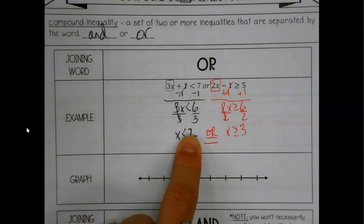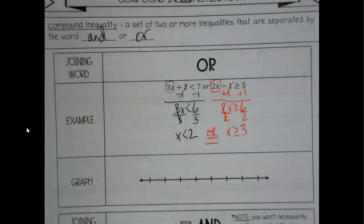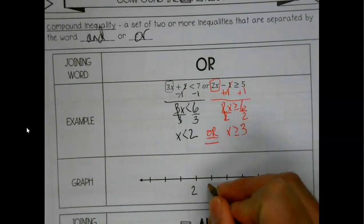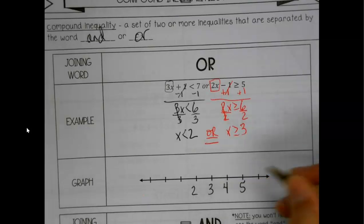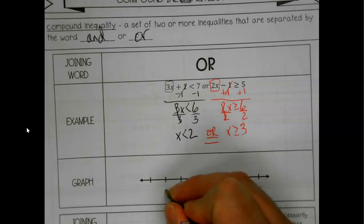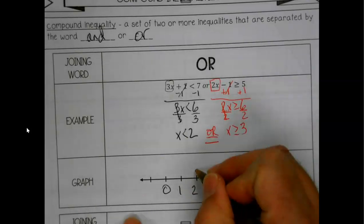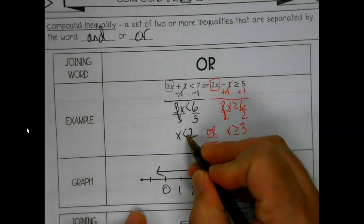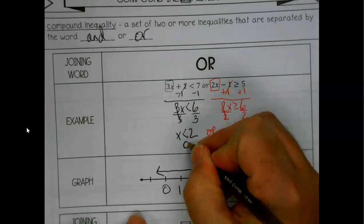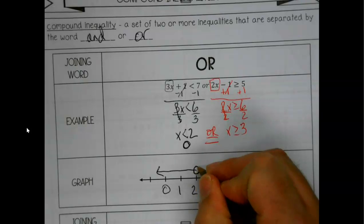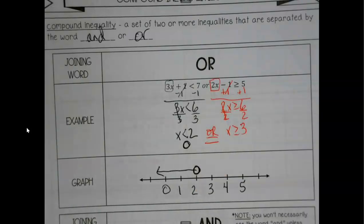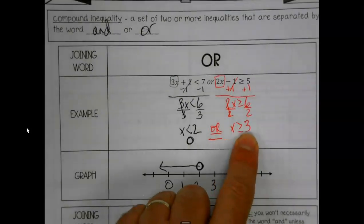The arrow is pointing at x — x is less than two. I always like to add one each time to the right and subtract one each time to the left on the number line. I want more than just the two numbers we're working with. Less than — reminder we're using the open circle because we're saying every number up to two but we're not including it. Then x is greater than or equal to three.